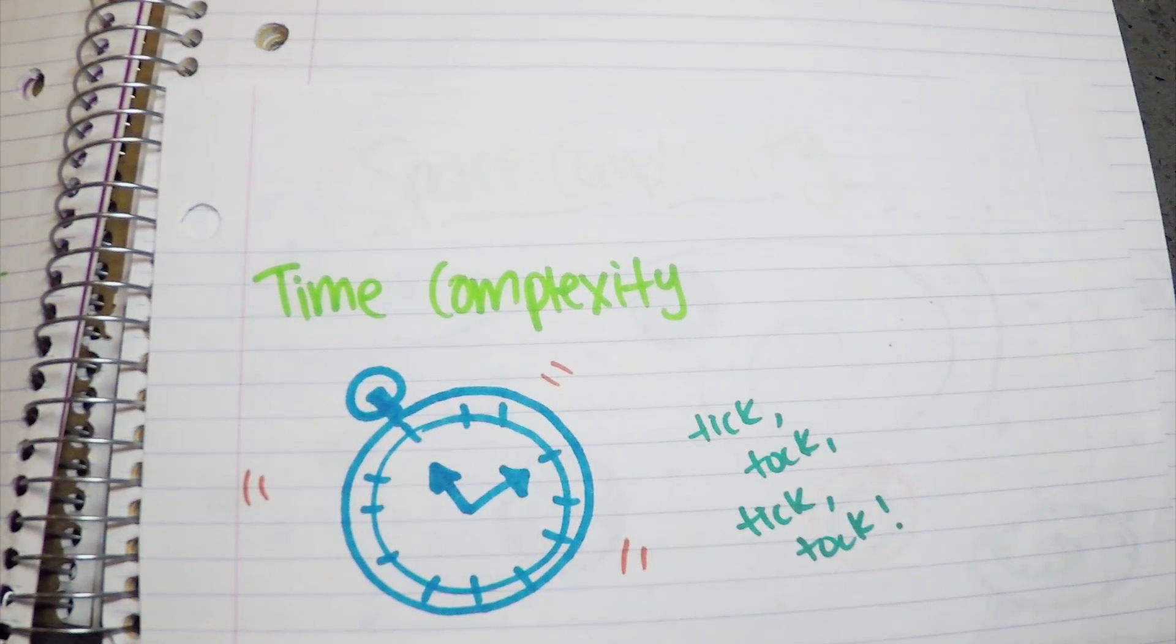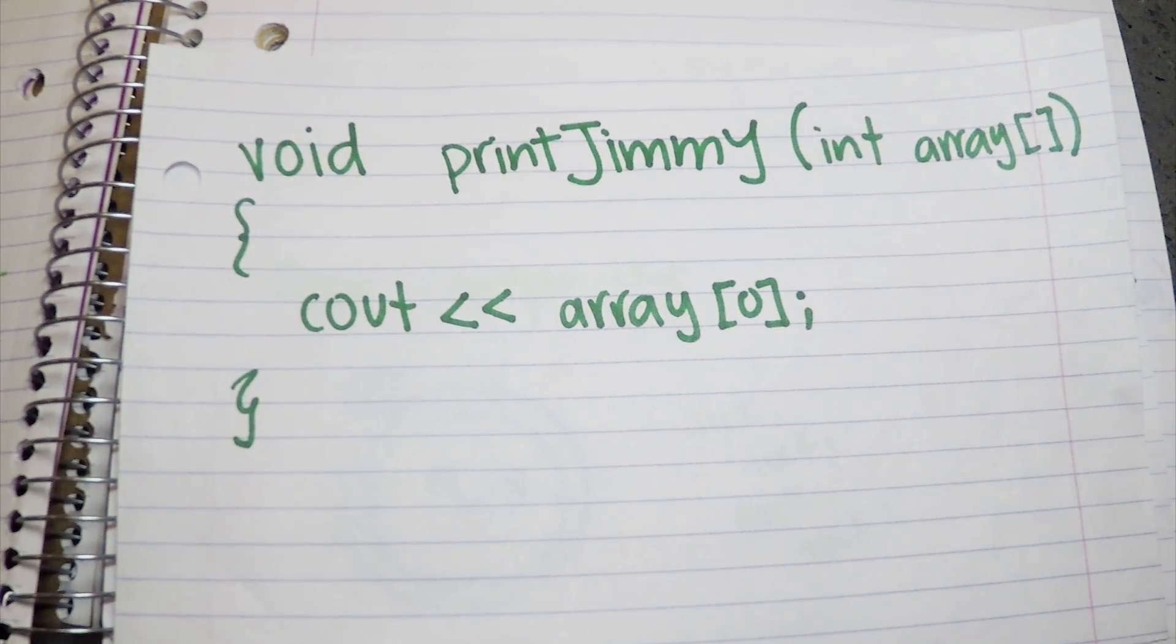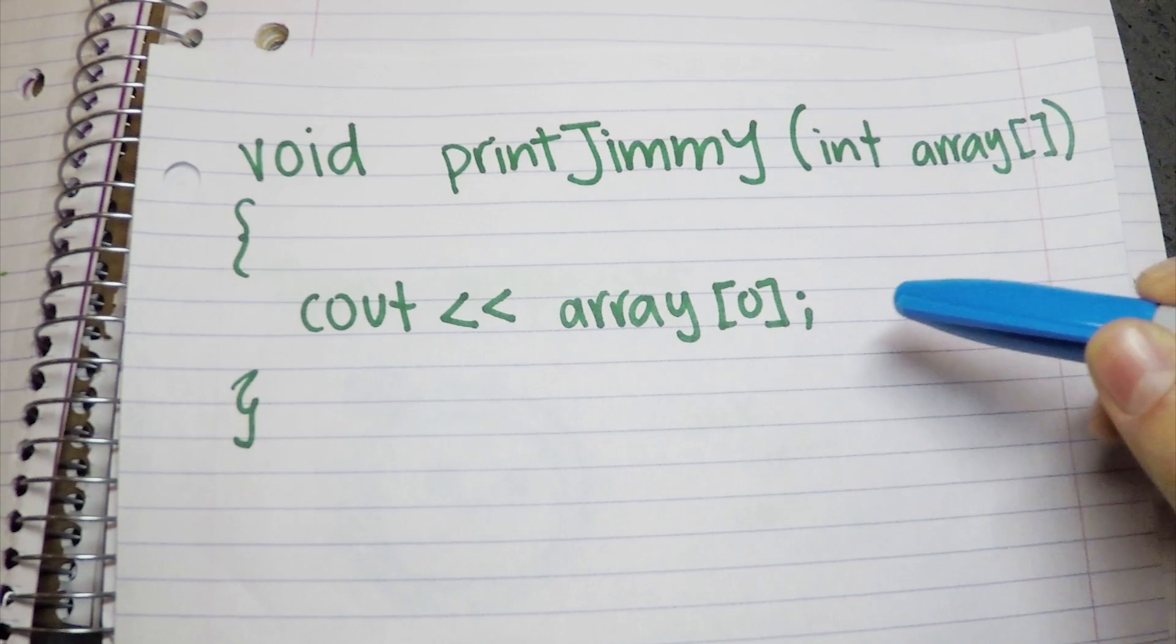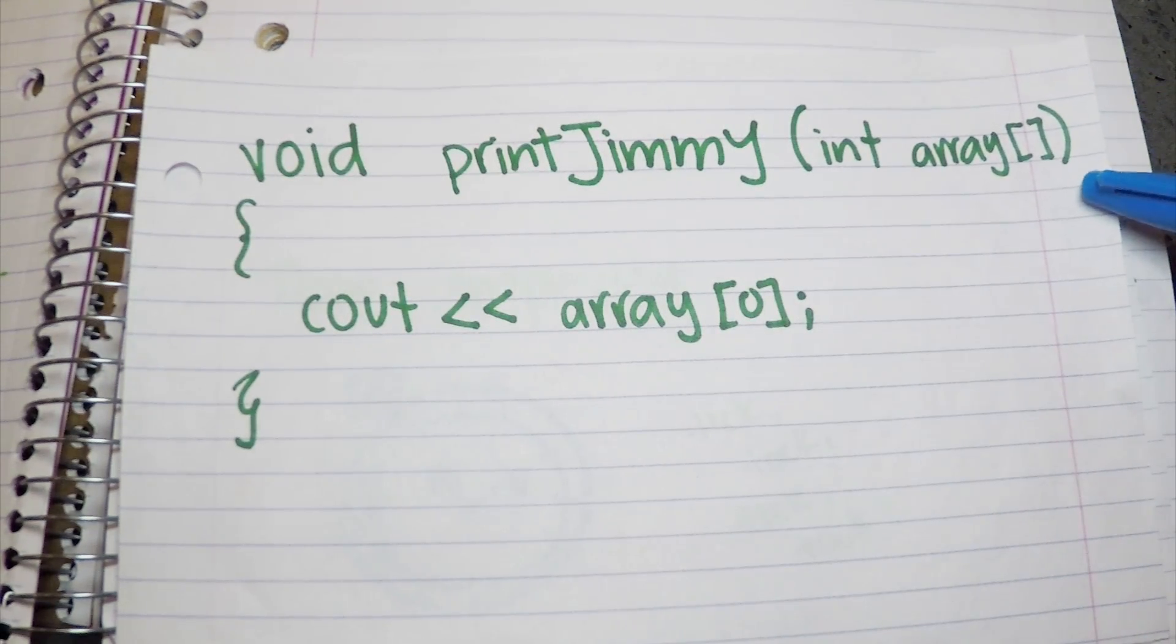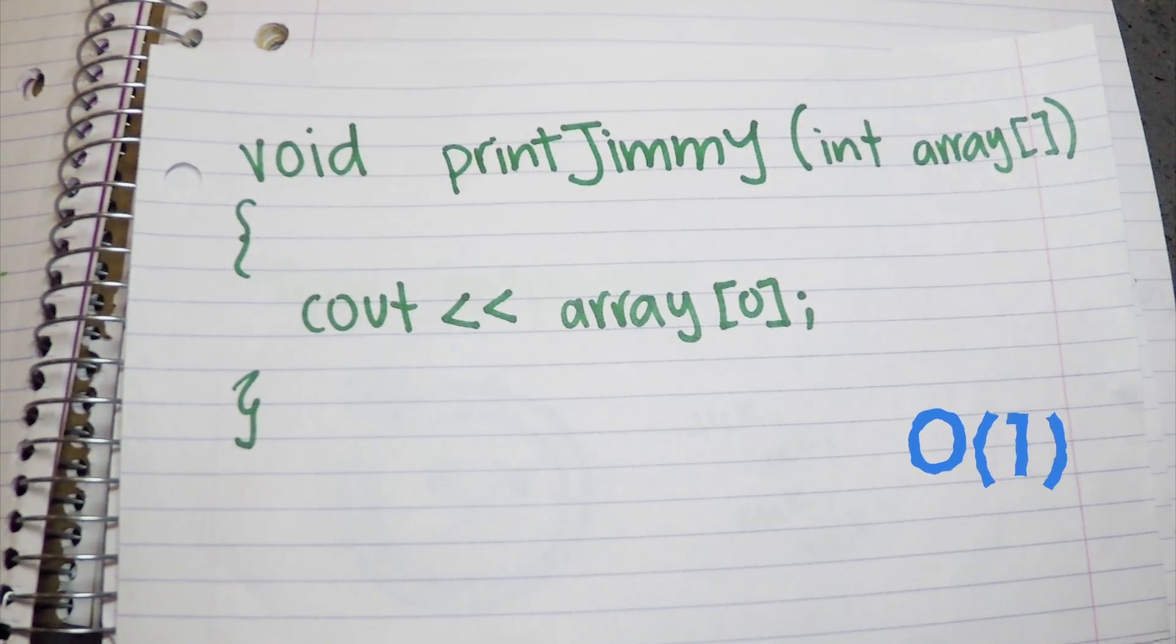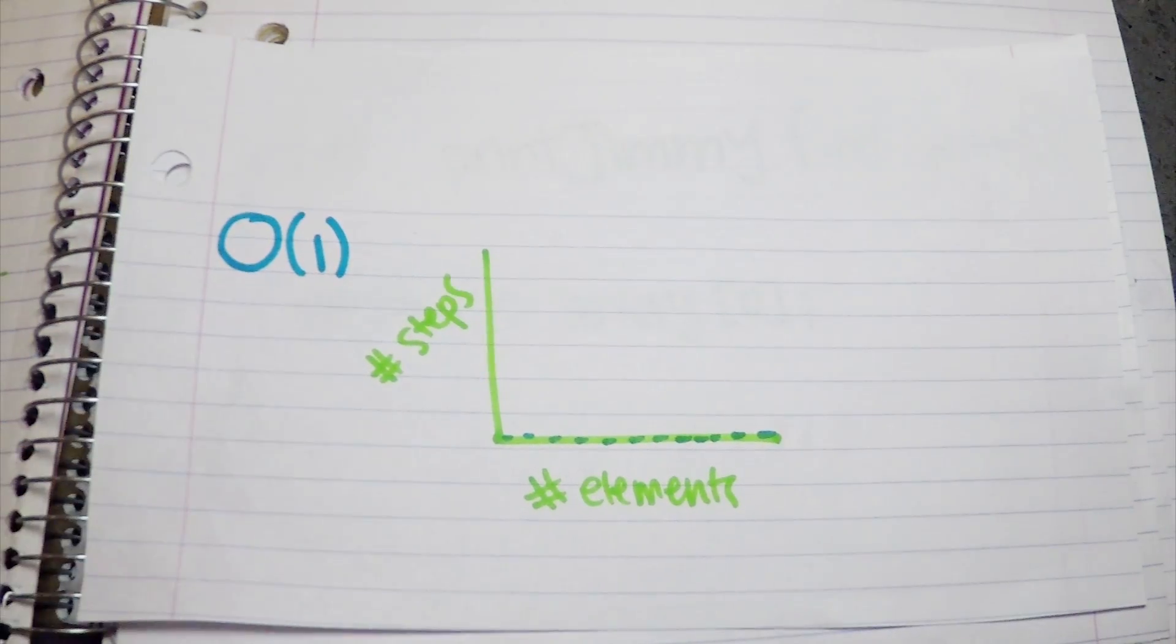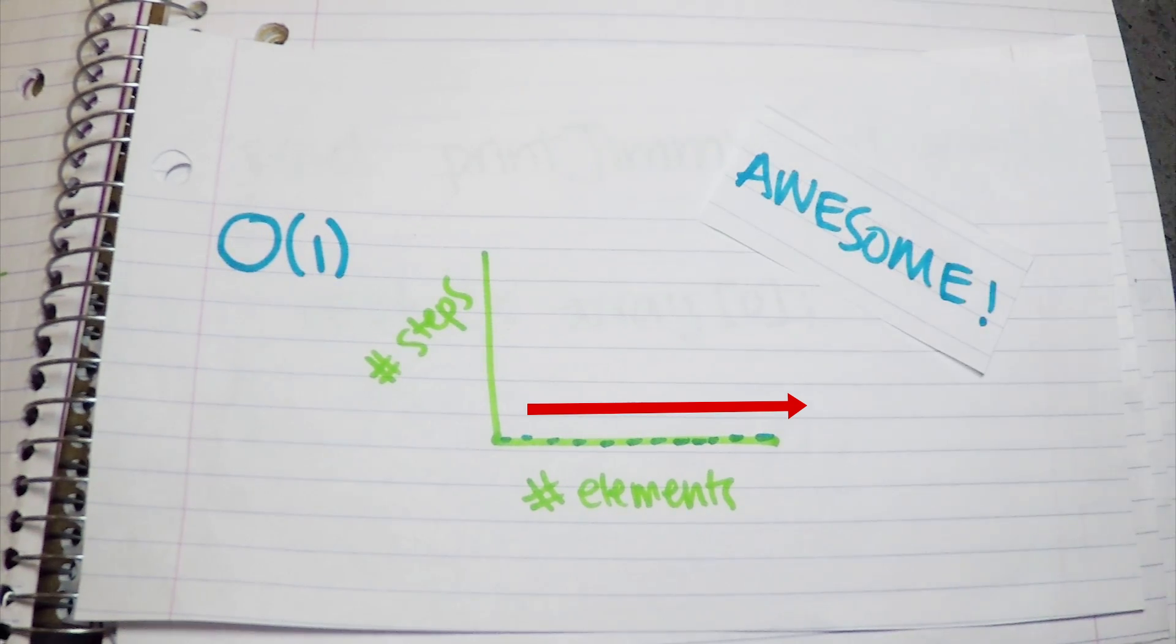Let's start with time complexity. In this function, I will pass an array and print the first element of my array. We could have ten or a thousand elements in my array, but we're just printing the first element. This is just one instruction. This will give me a complexity of O(1). That means I can have as many number of elements as I want, but my number of steps did not change. This is a really good case for the big O.